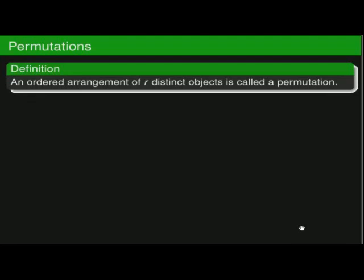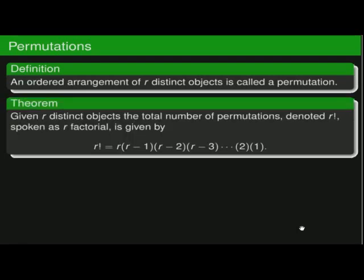So let's talk about permutations. An ordered arrangement of r distinct objects is called a permutation. If we've got a set that has r distinct objects in it, how many different ways can we form a permutation? Given r distinct objects, the total number of permutations — the total number of distinct orderings — is denoted r factorial. The formula for calculating that is r times (r minus 1) times (r minus 2) times (r minus 3), all the way down to 2 times 1. Let's see if we can prove that formula.